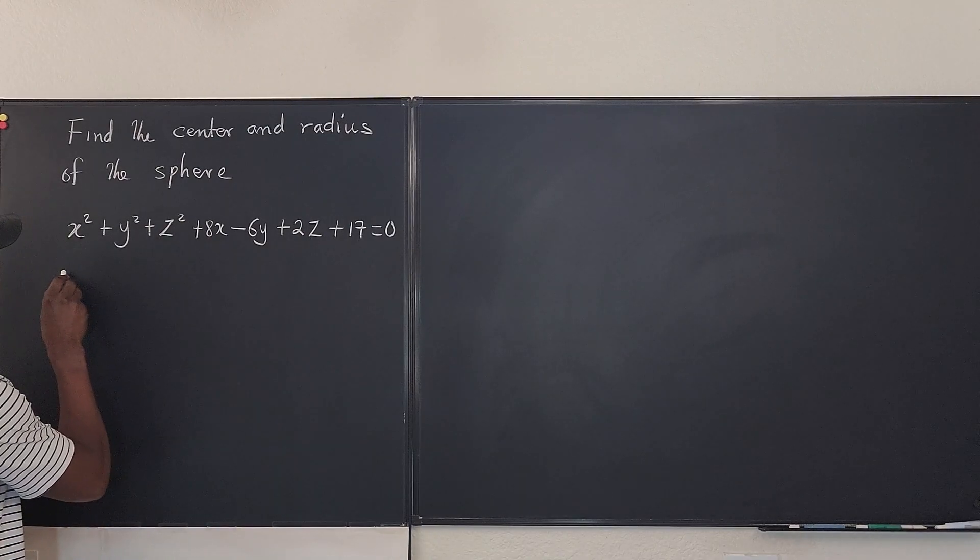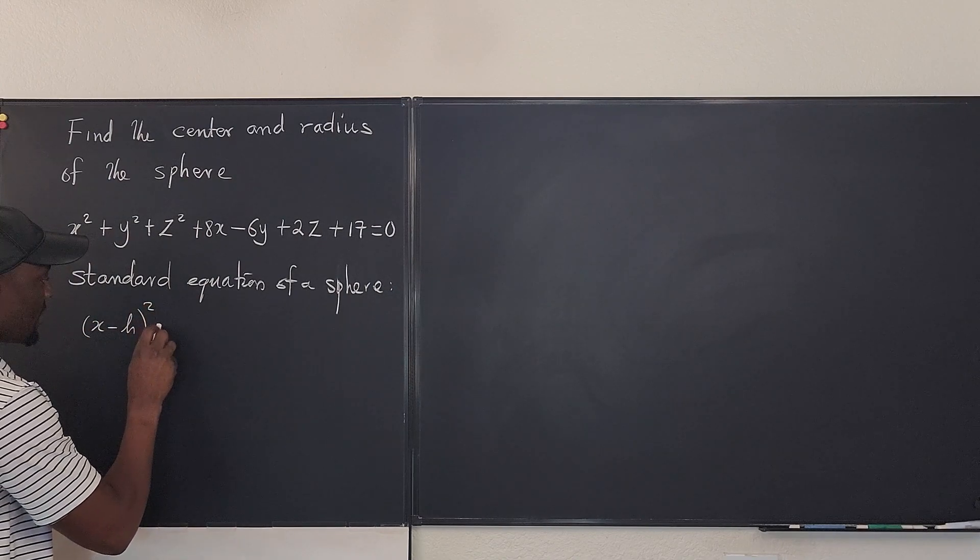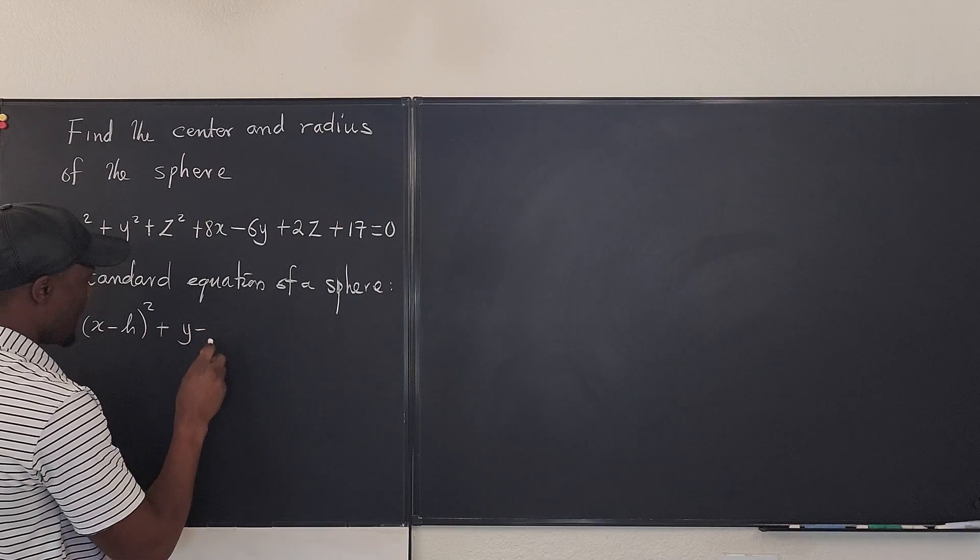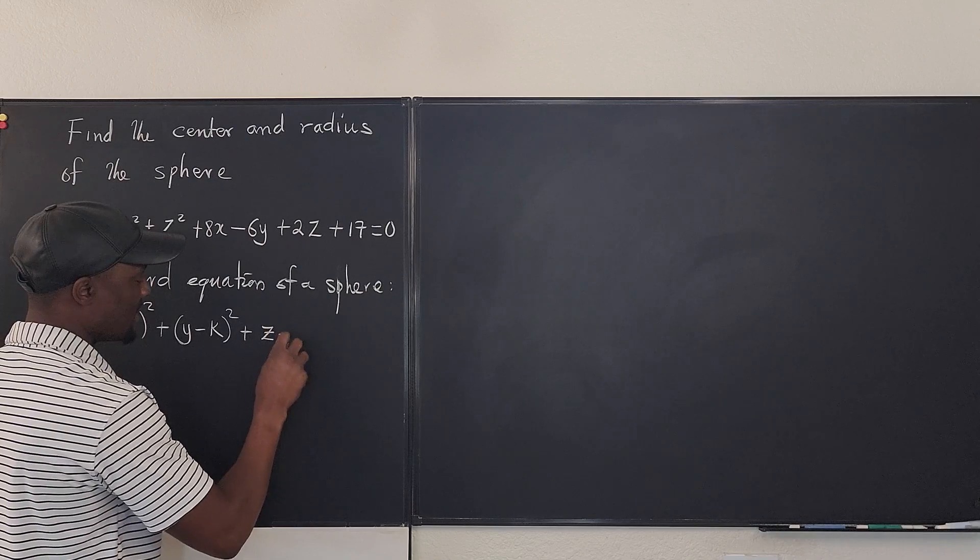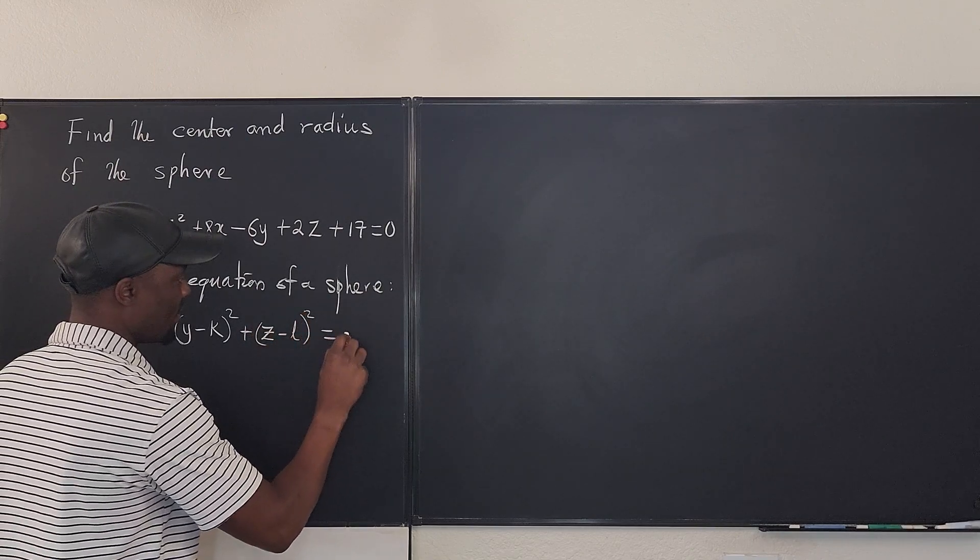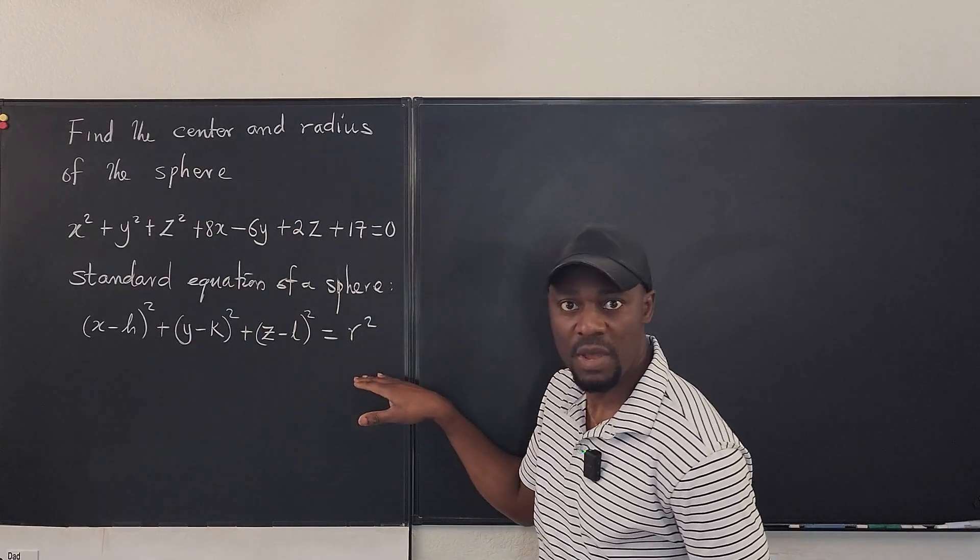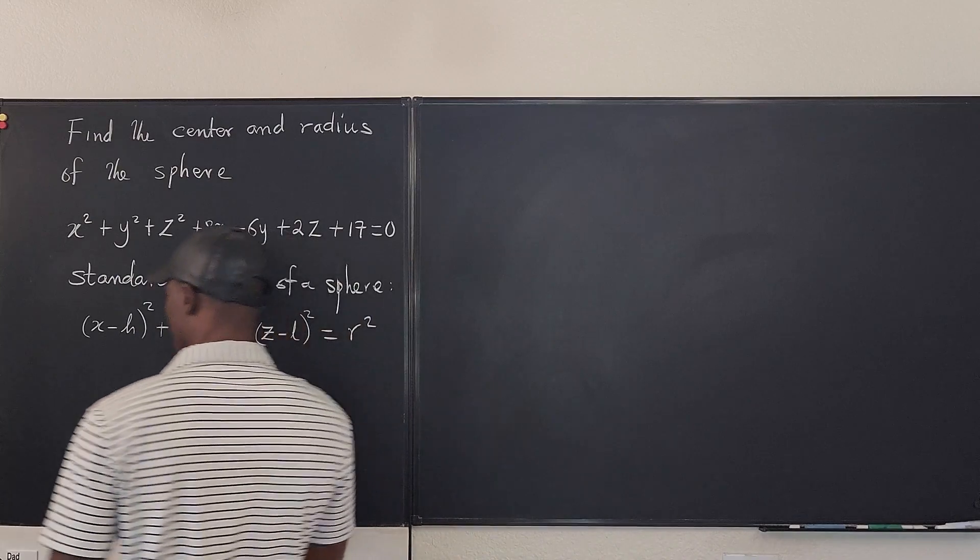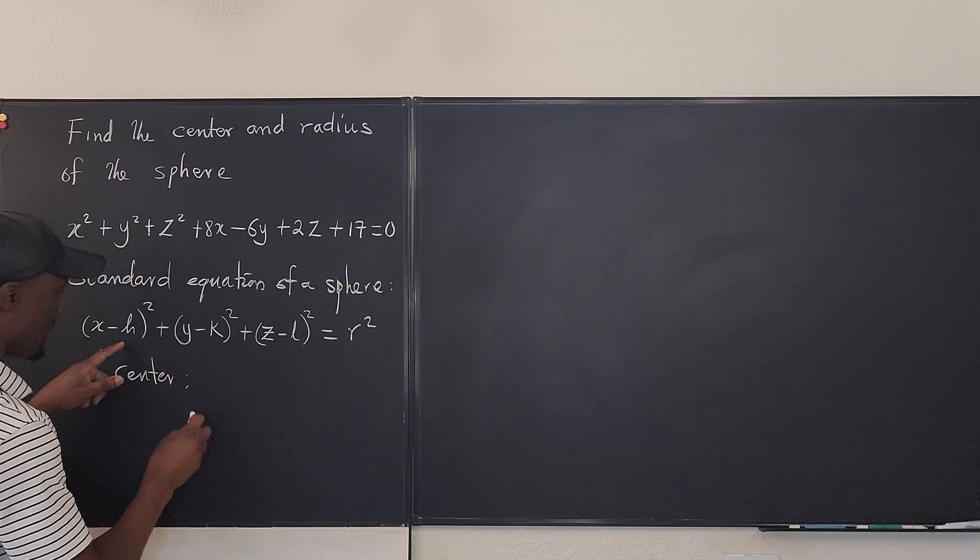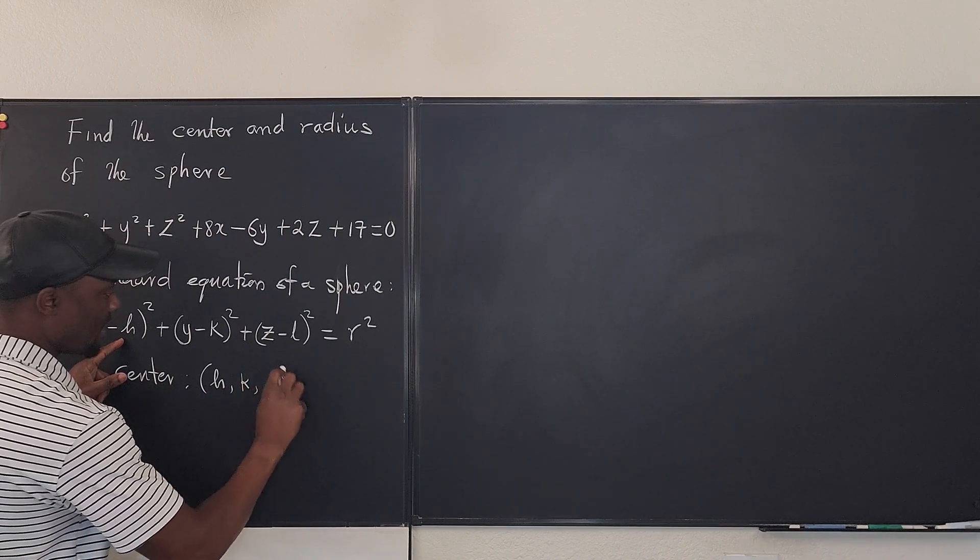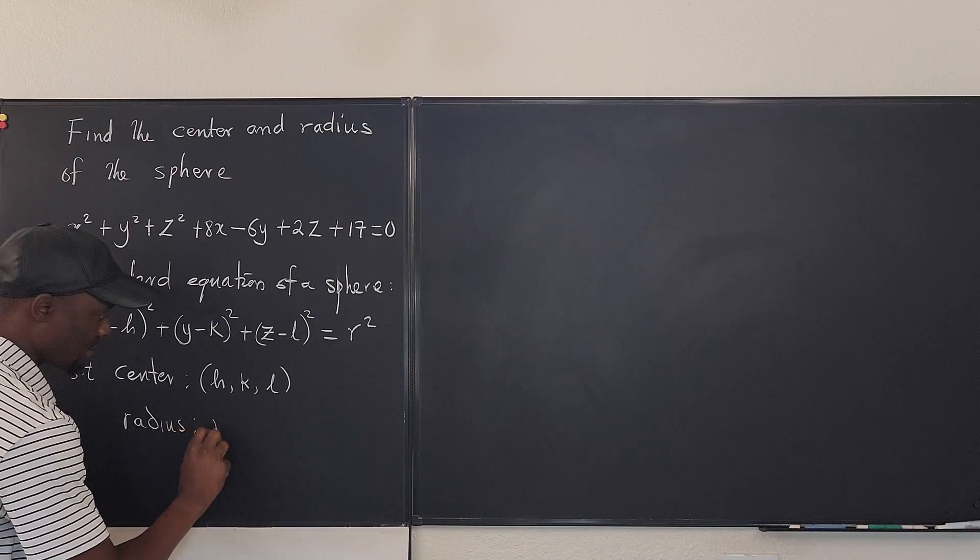So here we go. We have a standard equation. It simply says (x - h)² + (y - k)² + (z - l)² = r². So our job is just to rewrite this general equation in this form. If you can write it this way, you easily find the center such that the center is the point (h, k, l), and the radius is r.